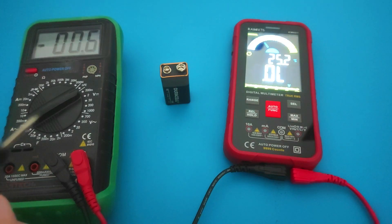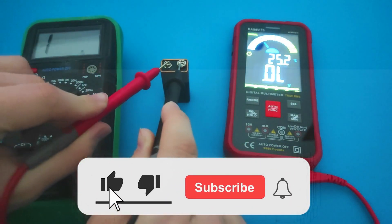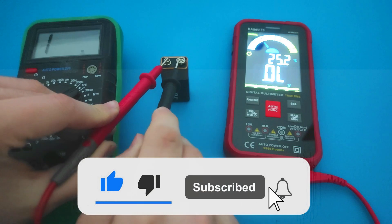We will test the voltage using two multimeters. One will display overload as one, while the other will display it as OL.